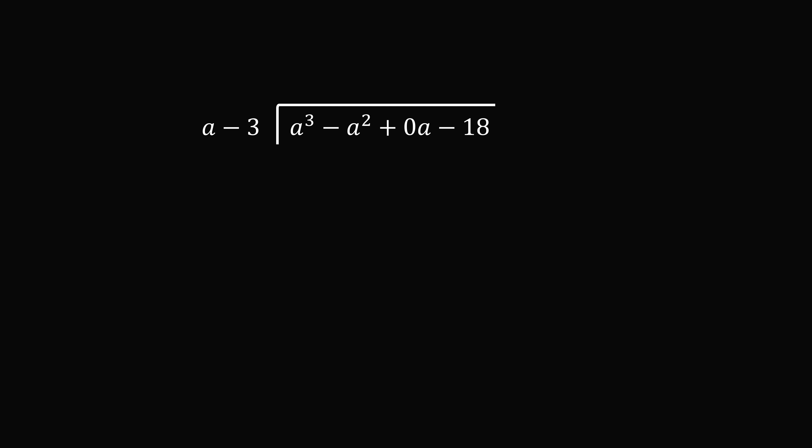First we want to eliminate the a cubed term. So we need to multiply a by a squared. So we take a squared multiplied by a minus 3. This is equal to a cubed minus 3a squared. We will subtract this from the original polynomial. We have to be careful about the opposite of negative 3a squared, which will be plus 3a squared. So we end up with 2a squared. Now we drop down the 0 multiplied by a.